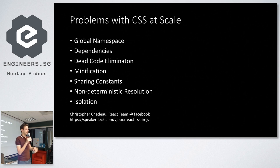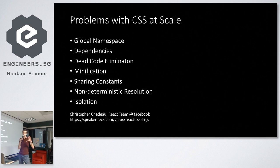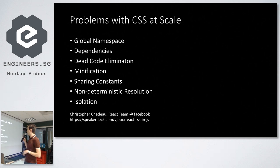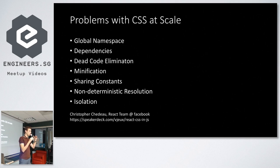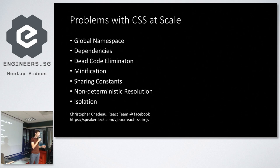There are ways to go around it, as we'll see. Other issues: dependency management is hard; dead code elimination is hard in plain CSS — you don't really notice when a class is no longer used. Minification is hard; you can't just rewrite class names easily or make your bundle size smaller. It's hard to share constants used all over the code. And then there's non-deterministic resolution — most of the time you only find out too late, or when you already have three '!important' declarations spread around your code.